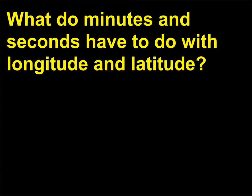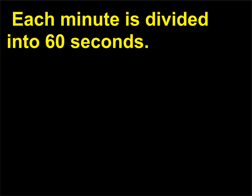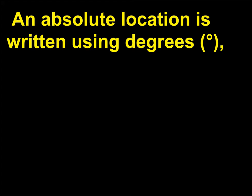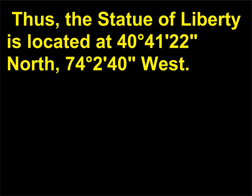What do minutes and seconds have to do with longitude and latitude? Each degree of longitude and latitude is divided into 60 minutes, and each minute is divided into 60 seconds. An absolute location is written using degrees, minutes, and seconds of both longitude and latitude. Thus, the Statue of Liberty is located at 40 degrees 41 minutes 22 seconds north, 74 degrees 2 minutes 40 seconds west.